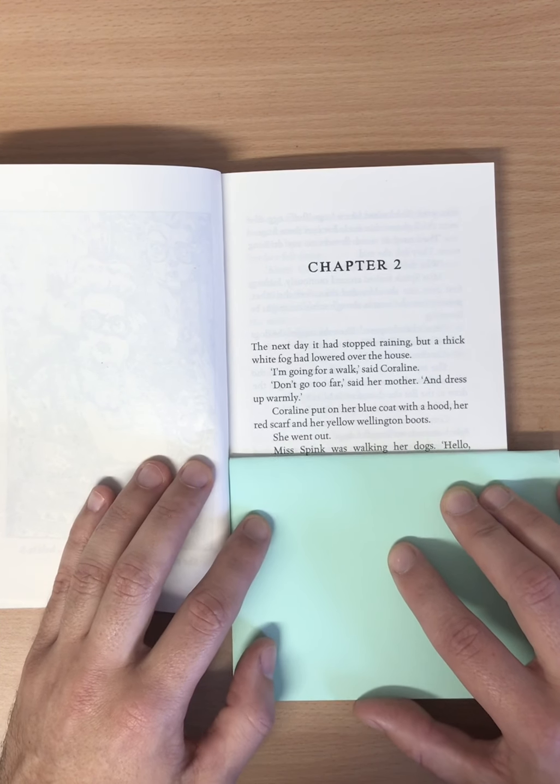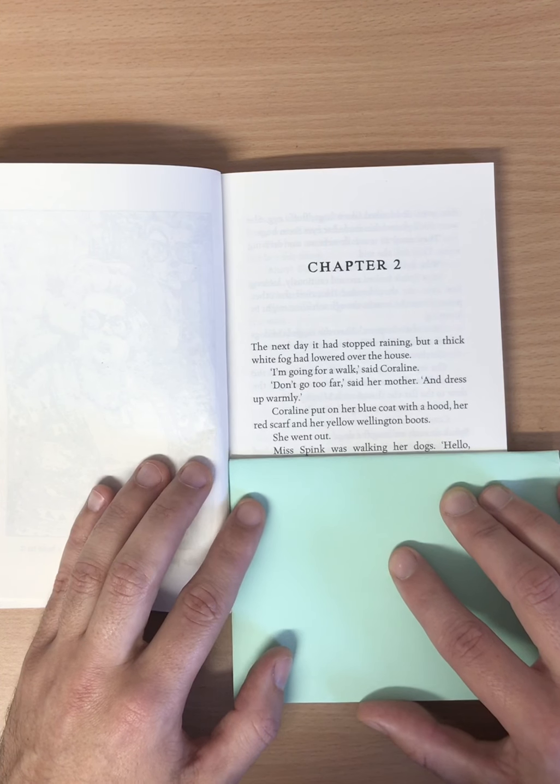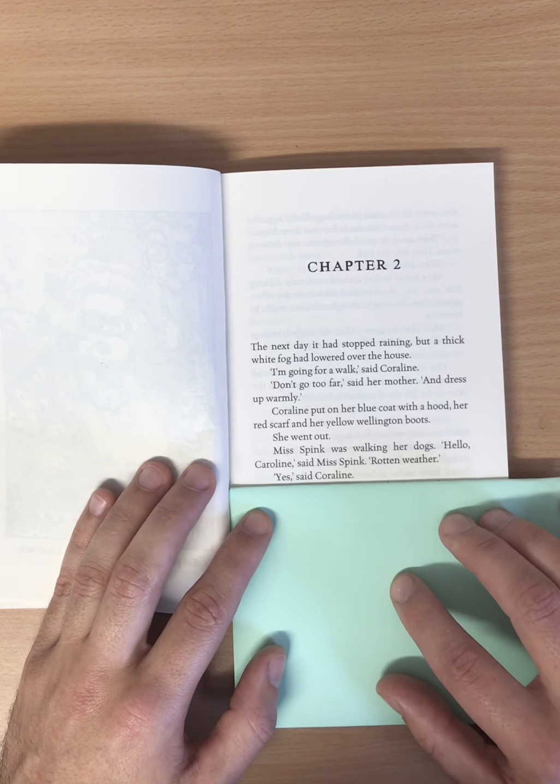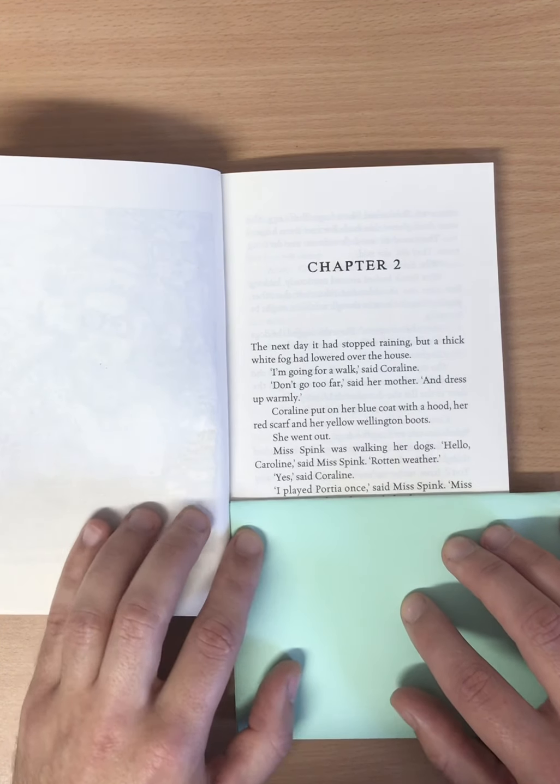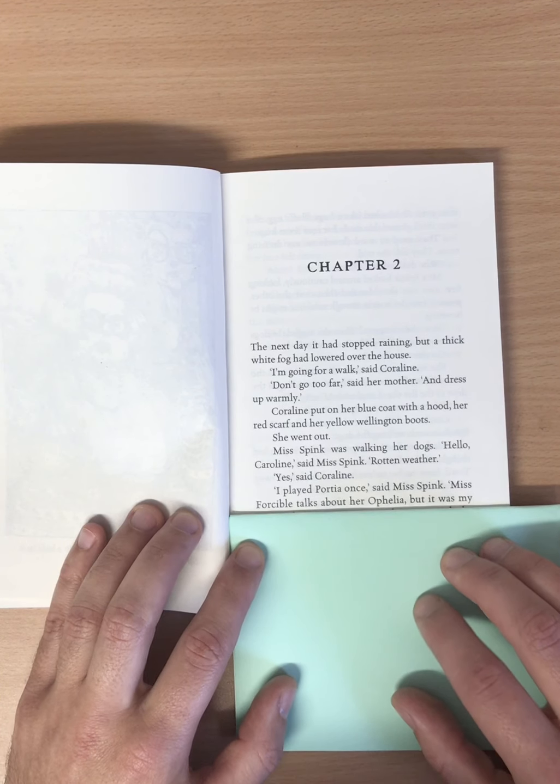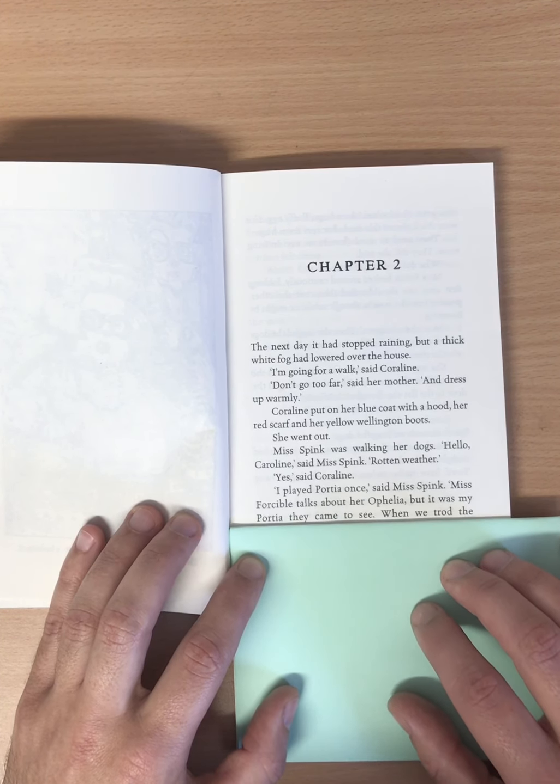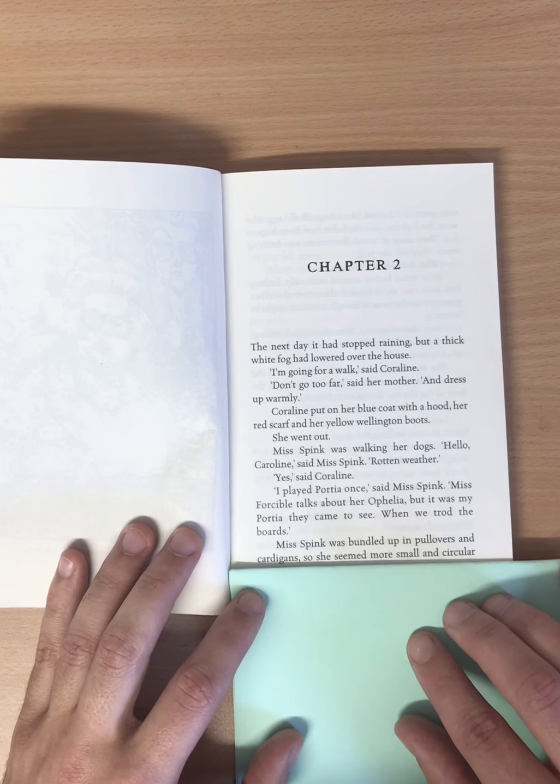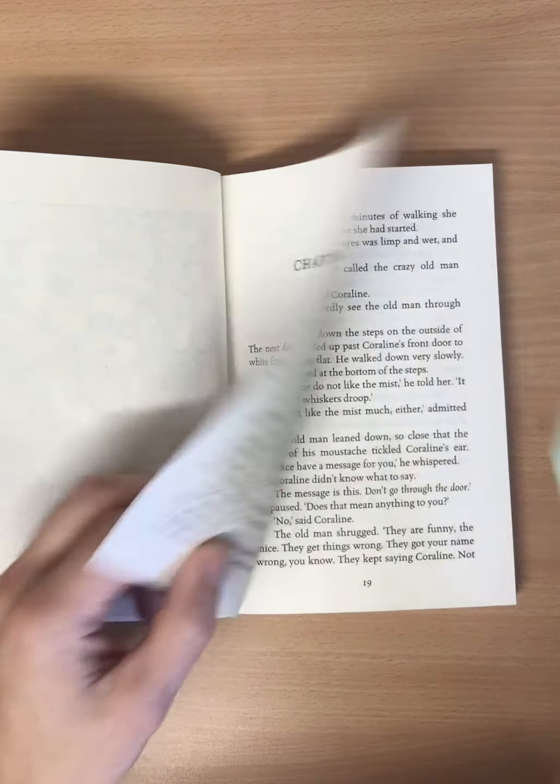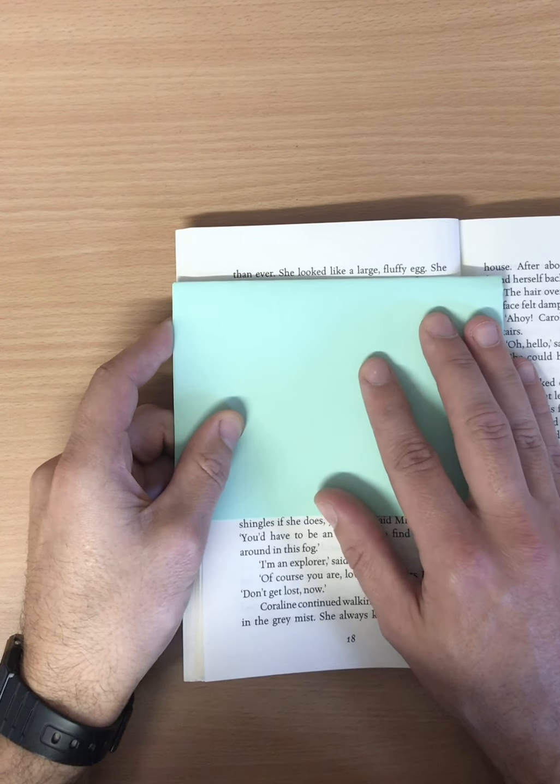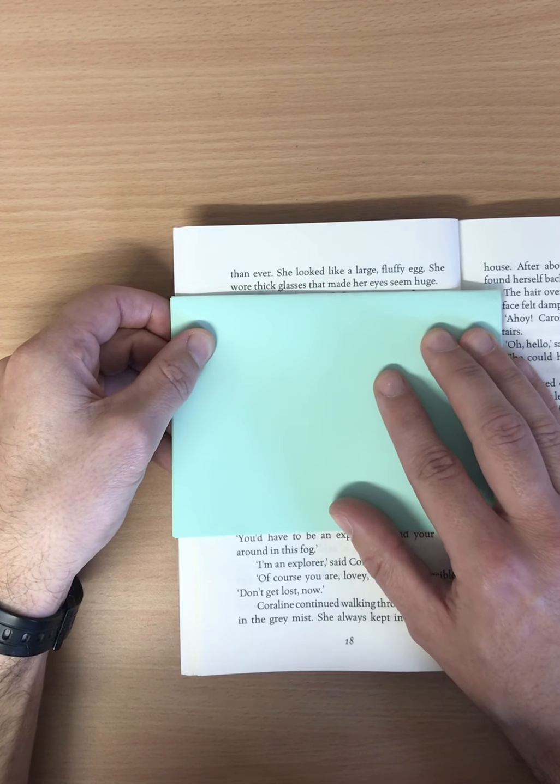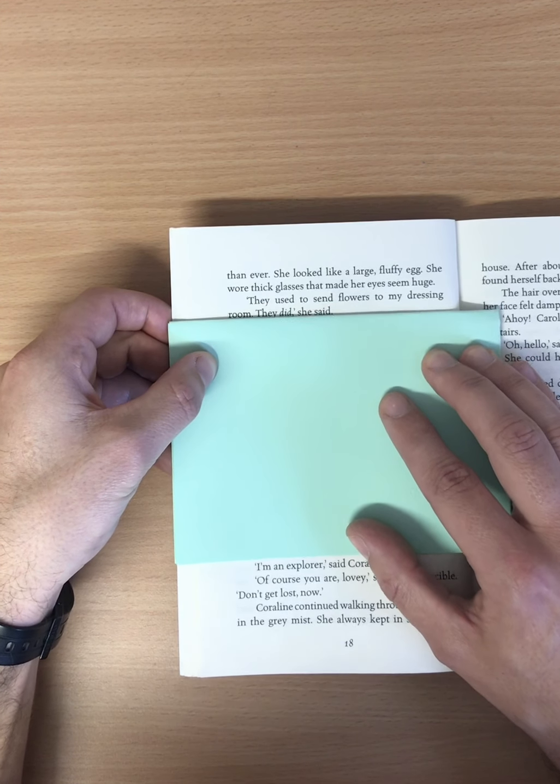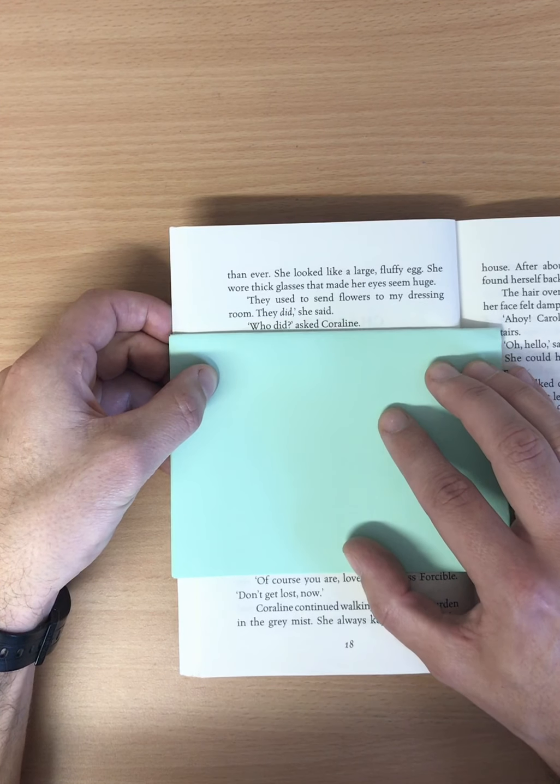She went out. Miss Spink was walking her dogs. Hello, Caroline, said Miss Spink. Rotten weather? Yes, said Coraline. I played Portia once, said Miss Spink. Miss Forcible talked about her Ophelia, but it was my Portia they came to see when we trod the boards. Miss Spink was bundled up in pullovers and cardigans, so she seemed more small and circular than ever. She looked like a large, fluffy egg. She wore thick glasses that made her eyes seem huge. They used to send flowers to my dressing room. They did, she said.